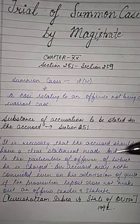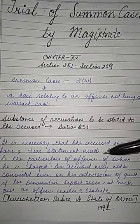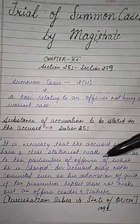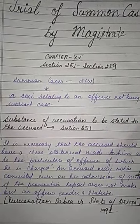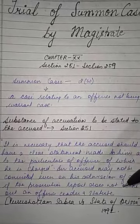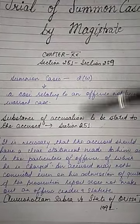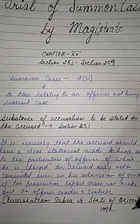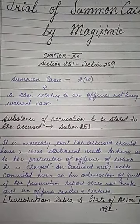The accused may not be convicted even on his admission of guilt — even if he pleads guilty — if the prosecution report does not make out any offense under the statute. This was held in Purushottam Sabra vs. State of Orissa, 1992. Please mention this case in your notes.